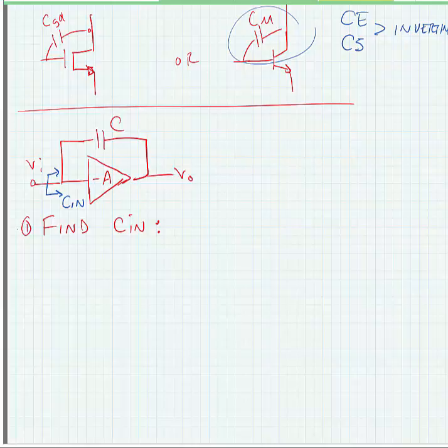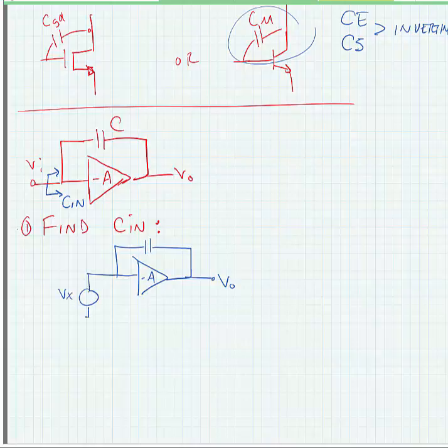Okay, in order to do this, we're just going to replace the input with a test voltage source, measure the current Ix that would flow from this source. One thing we know is that the output voltage, if this amplifier is working well, is going to be minus A times Vx, which is the test voltage that we're putting into the amplifier.